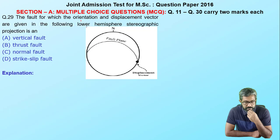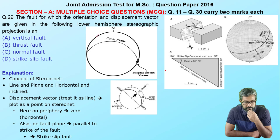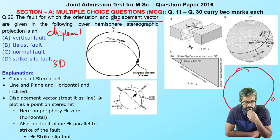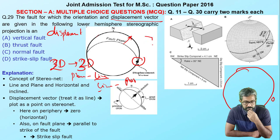Moving to the next question — a structural geology question involving a stereonet. On a stereonet, the center represents greater depth while the periphery has dip of zero. The stereonet is a 2D representation of 3D: a plane plots as a line, and a line plots as a point. Here we have a fault plane dipping in a certain direction. In a normal fault we have displacement; in a strike-slip fault we may have zero displacement.